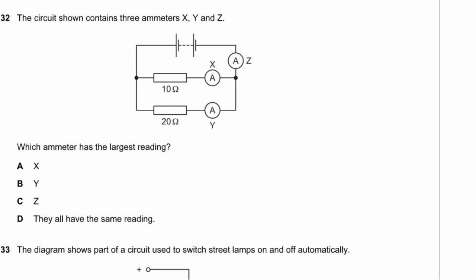Question 32. The circuit has three ammeters X, Y, and Z. Some current goes through X, some through Y, and all of the current goes through Z. So Z has the combined value of X and Y and gives the largest reading. The answer is Z.